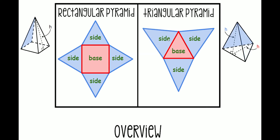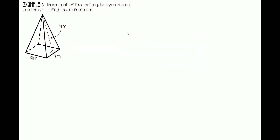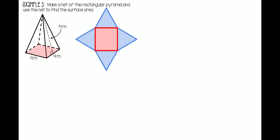Let's start with a rectangular pyramid example. We're going to make a net of it and use the net to find the surface area. Let's start by finding the area of the base. The area of a rectangle is base times height. We know the base is 9, so replace b with 9. We also know the height is 9, so replace h with 9. Area equals 9 times 9, which is 81 meters squared. Write 81 right in there.